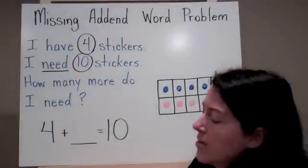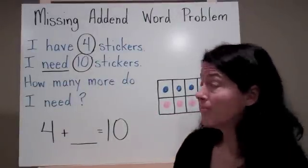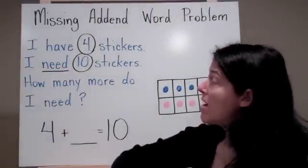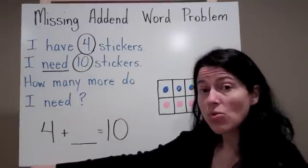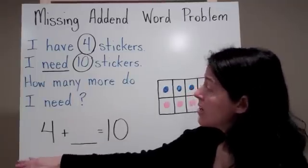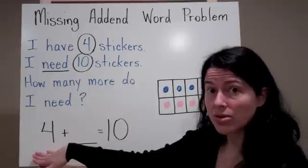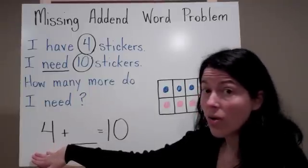How does this look in a word problem? I have 4 stickers. I need 10 stickers. How many more do I need? So I know that I have 4 stickers so I have 1 known addend.